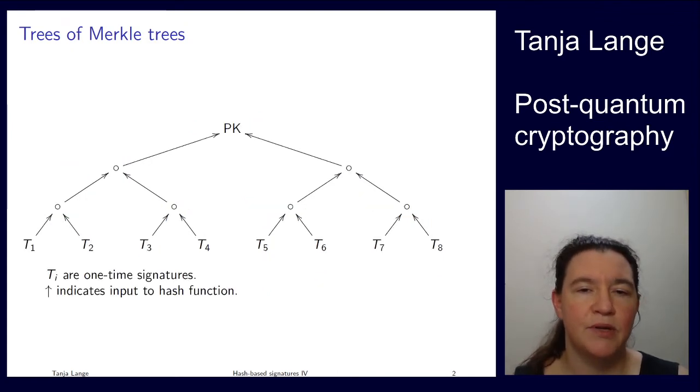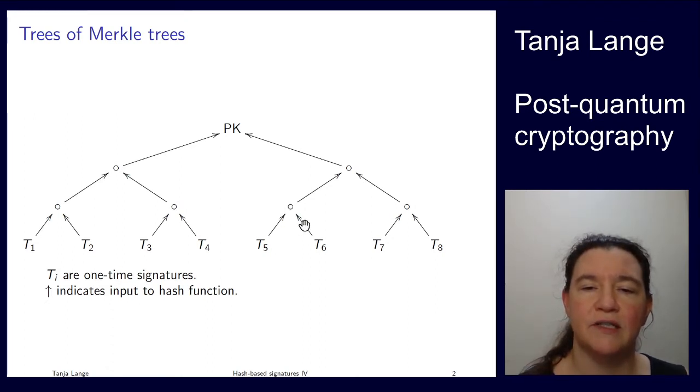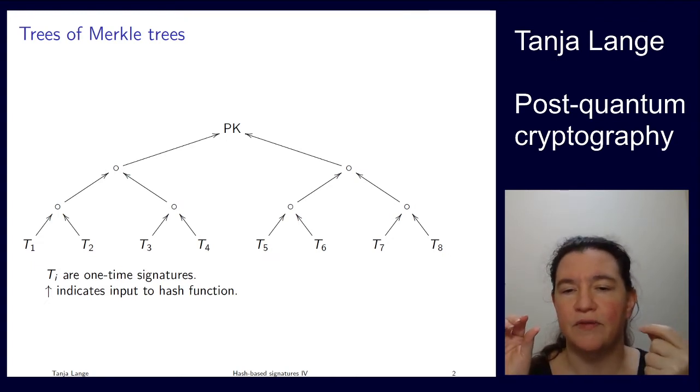So here you see the same picture. The root of the tree is a public key. Incoming arrows going upwards, those are inputs to hash functions. So when you see, for instance, this node above T5 and T6 here, then that is taking the public parts of T5 and T6 and hashing them together to form that node. And so on.